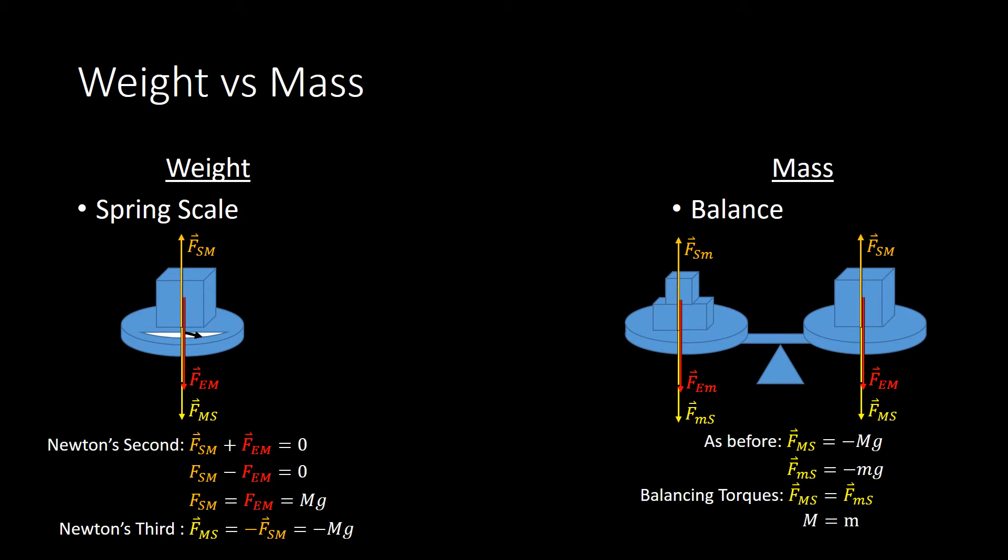So now, we know exactly what the unknown mass, M, is. On the other hand, the weight that we're measuring is actually a combination of this mass and the gravitational acceleration.